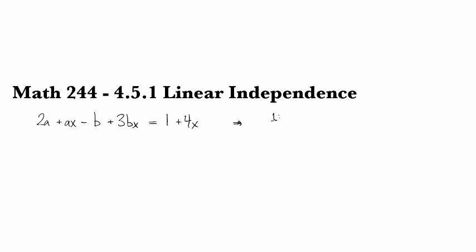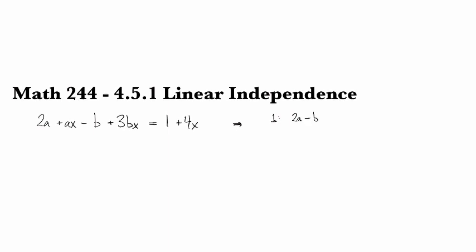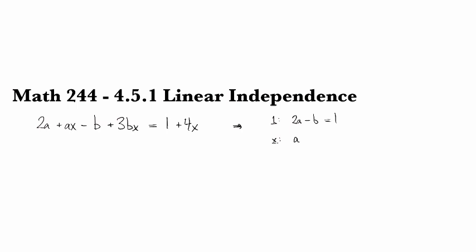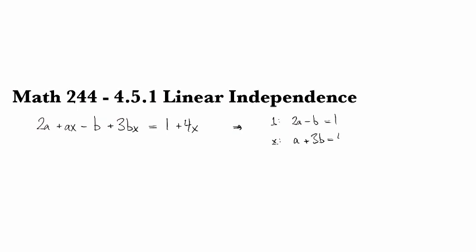So for 1, on the left-hand side we have 2a minus b, and on the right-hand side we have 1. And if we look at the coefficients of x, then on the left we have a plus 3b, and on the right-hand side we have 4.